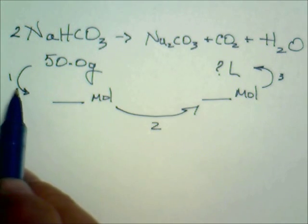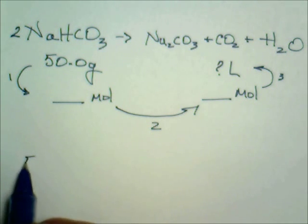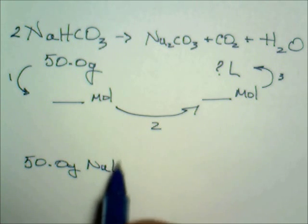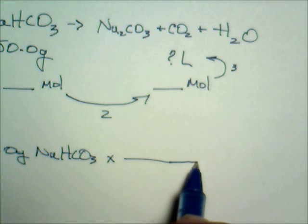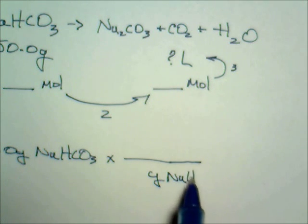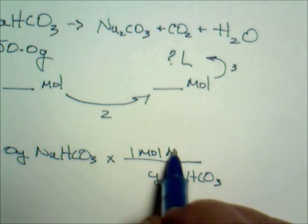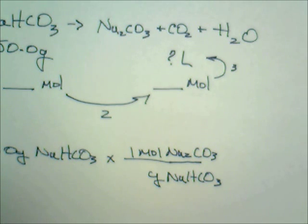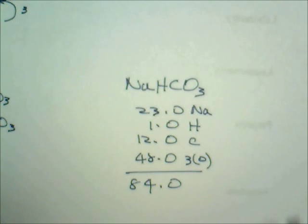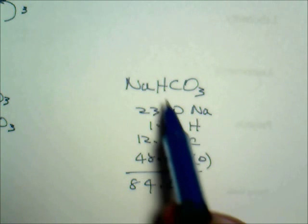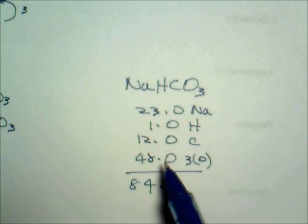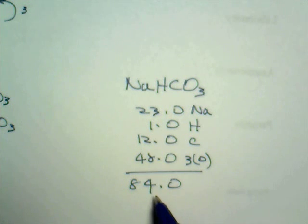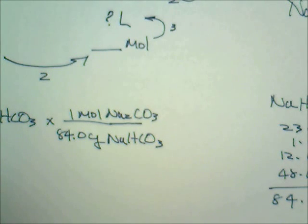Starting with 50 grams of NaHCO₃, we multiply by a conversion factor with grams on the bottom and one mole on top. The molar mass of sodium bicarbonate is: 23 (Na) + 1 (H) + 12 (C) + 3×16 (O) = 23 + 1 + 12 + 48 = 84 grams per mole.